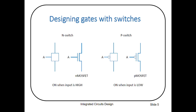MOSFET has two types: N-type MOSFET (NMOS) and PMOS transistors. This is the symbol for a simple NMOS transistor and this is the symbol for a PMOS transistor. In PMOS you can see a bubble on the gate. Your NMOS transistor turns on when gate voltage is high, and your PMOS transistor turns on when gate voltage Vg is low or equal to zero. You can turn your NMOS and PMOS transistors on and off by applying the appropriate gate signal.